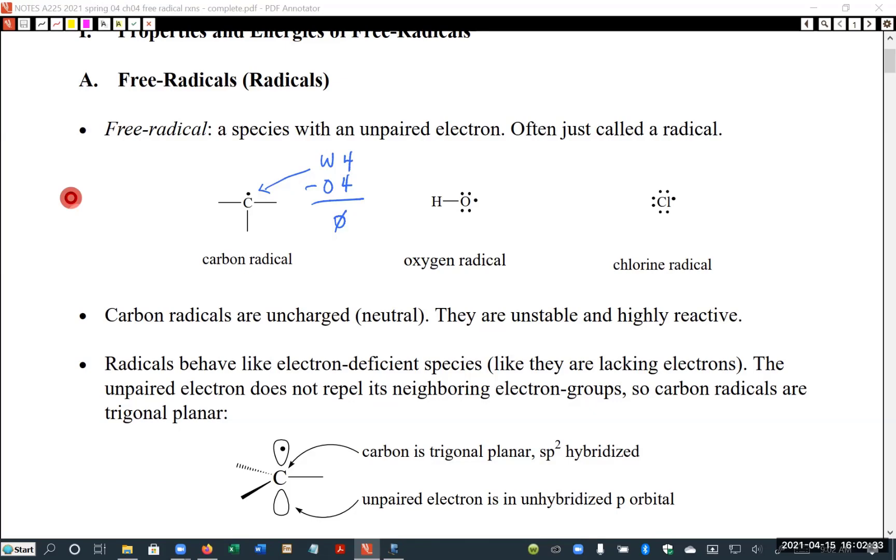So that's why technically calling them just radicals is not correct in the old thing, but the usage sort of changed after this and now anything with a single electron is usually called a radical. So for example, this is a carbon radical, here's an oxygen radical, here's a chlorine radical. We could just call this a chlorine atom.